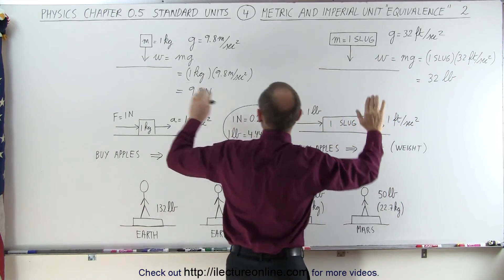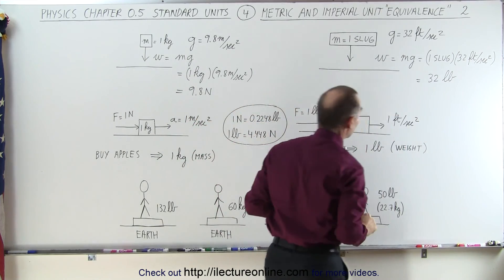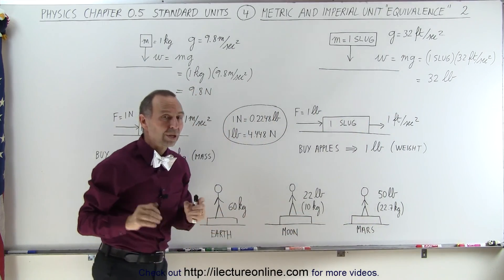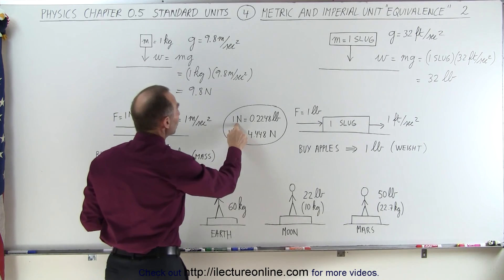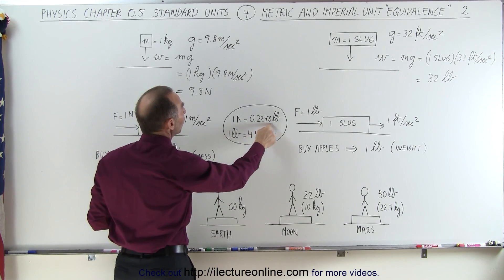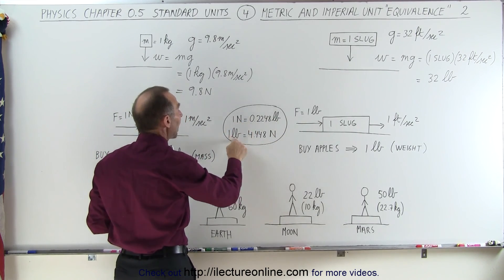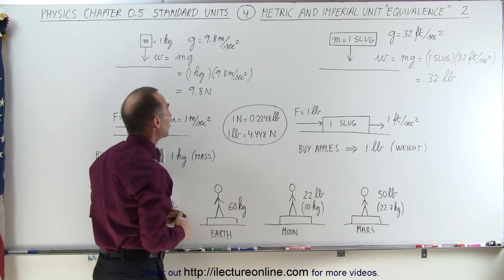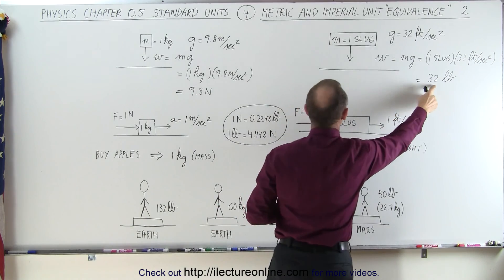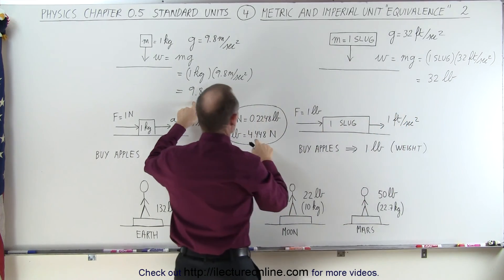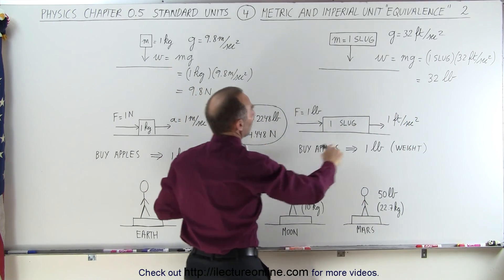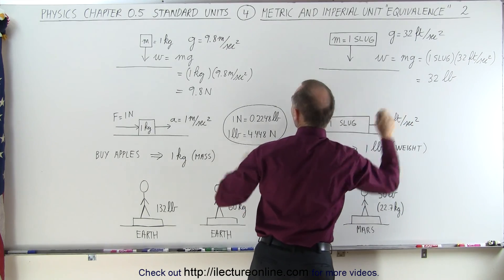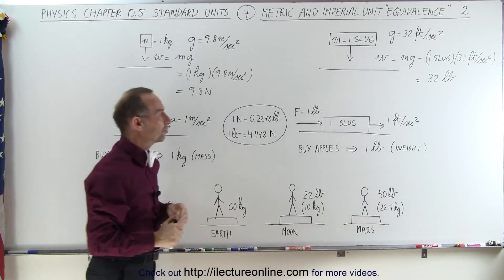Now, this is not the same object, so 9.8 newtons is not 32 pounds. What is the equivalence is that 1 newton is 0.2248 pounds, or 1 pound is 4.448 newtons. So you can see that 32 pounds, if you want to convert that to newtons, you have to multiply times 4.4, and you can see this is well over 100 newtons, so a much larger object.